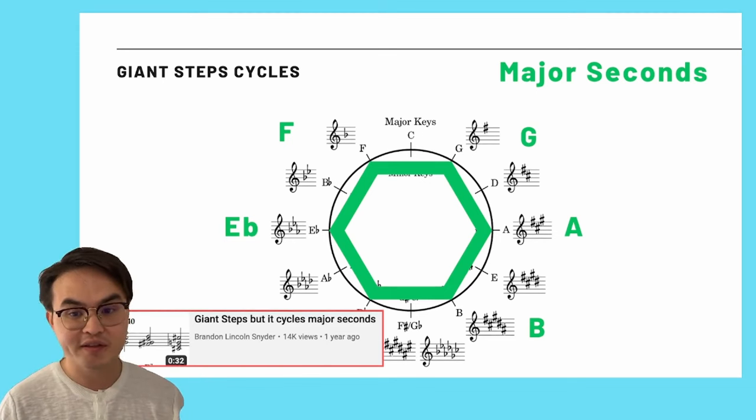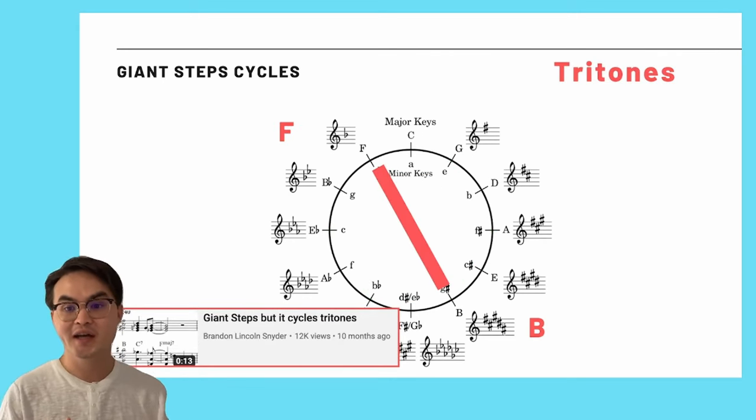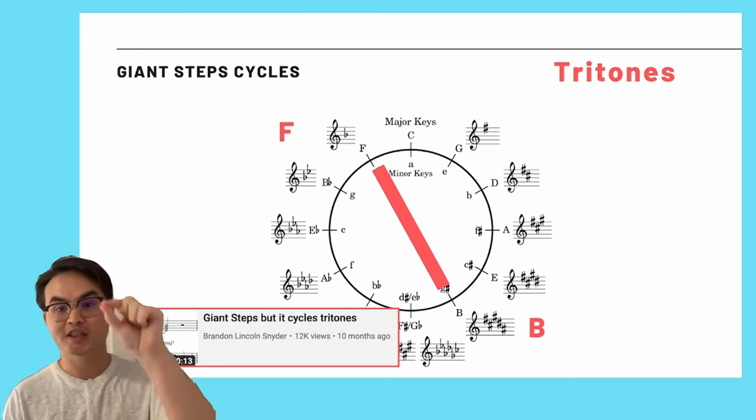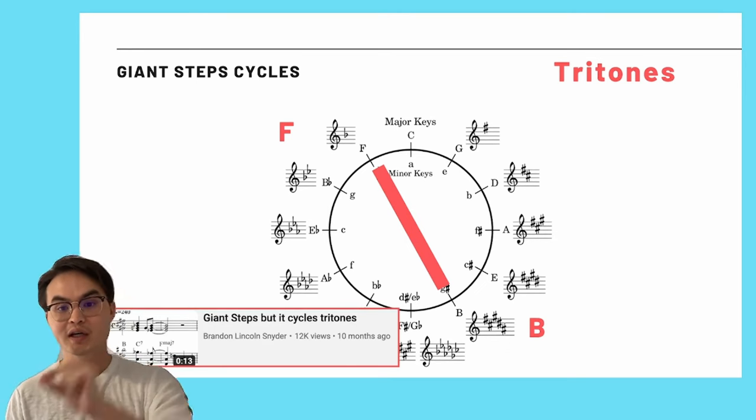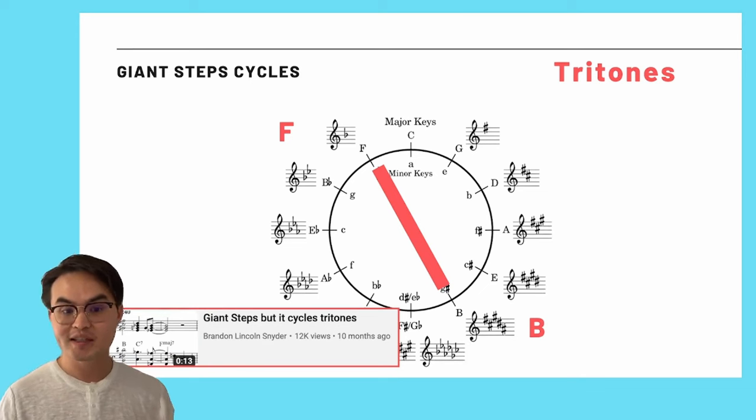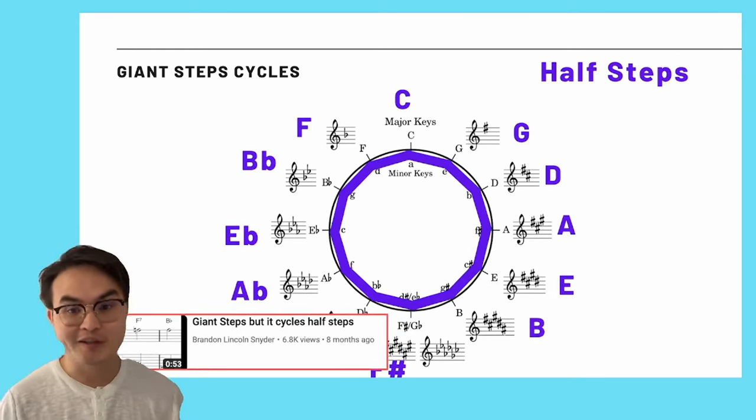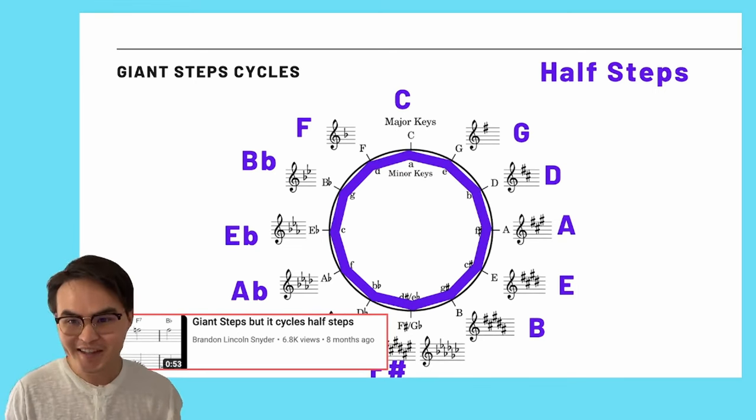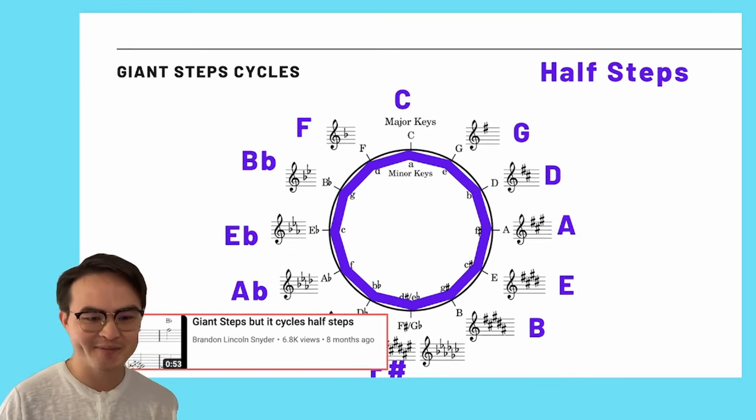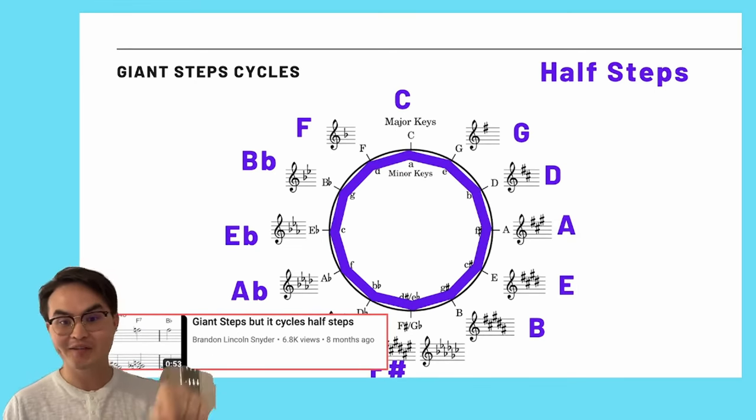I had Giant Steps cycle in major seconds, which can be represented as a kind of symmetrical hexagon on the circle of fifths, and I even went the reverse direction. I had Giant Steps cycling tritones, meaning it just oscillated between two key centers that are equidistant from one another. And yeah, you can go on my YouTube channel and check out all the videos I made.